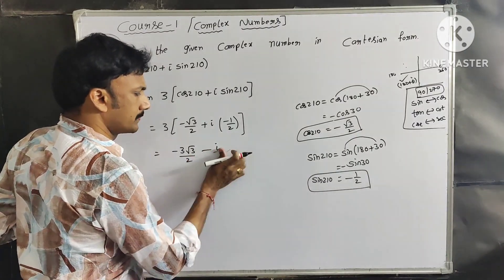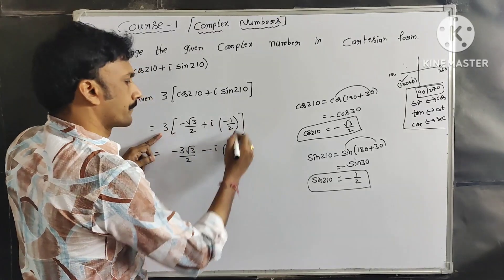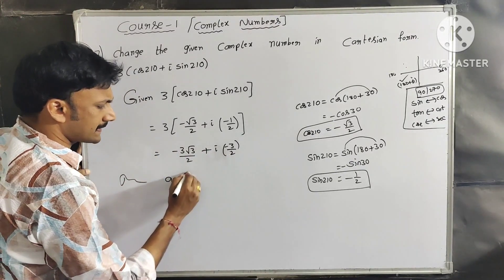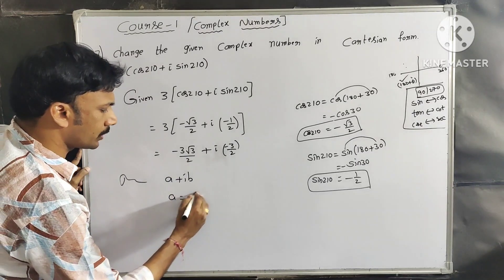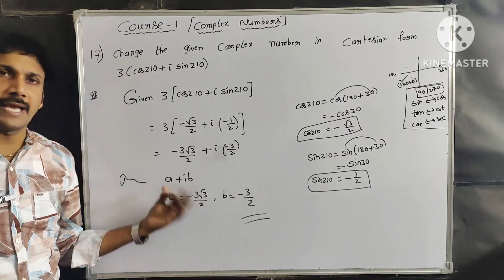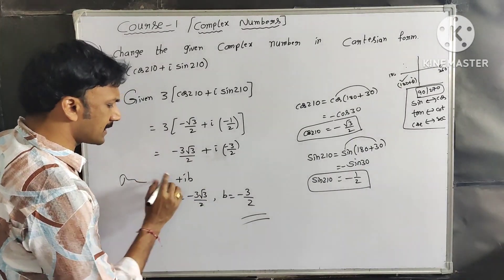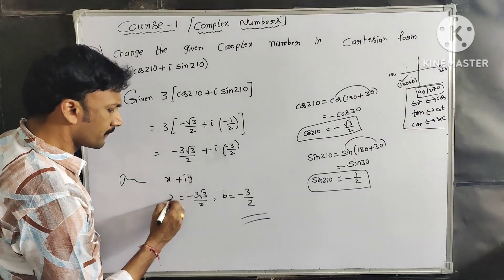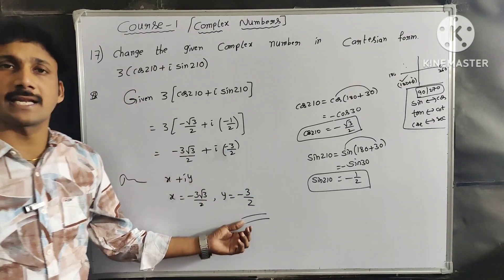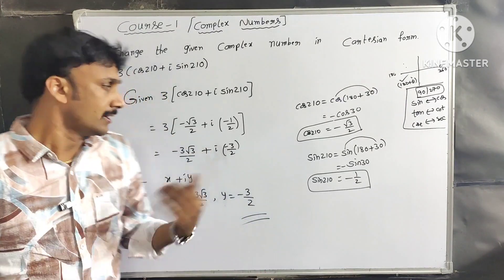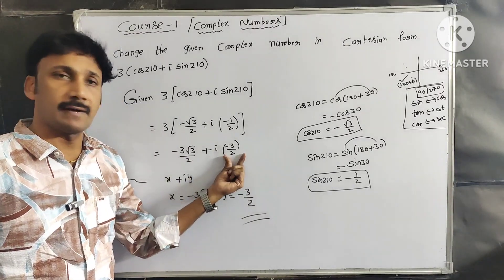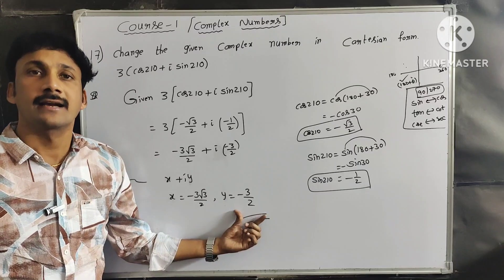Simplifying, we get −3√3/2 − 3i/2. In Cartesian form x + iy, x = −3√3/2 and y = −3/2. This is the Cartesian form of the given complex number.